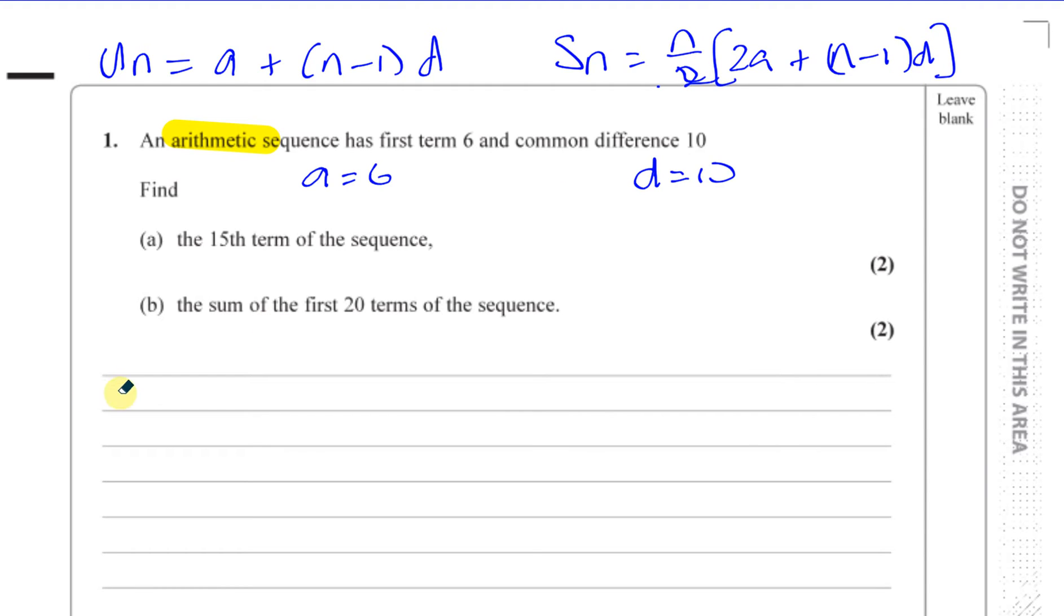Question part a is asking us to find a particular term. Find the 15th term of the sequence. The 15th term of the sequence is going to be when n equals 15. We're going to use the formula un equals a plus n minus 1 times d for this one. We know the first term a is 6 and the common difference d is 10.